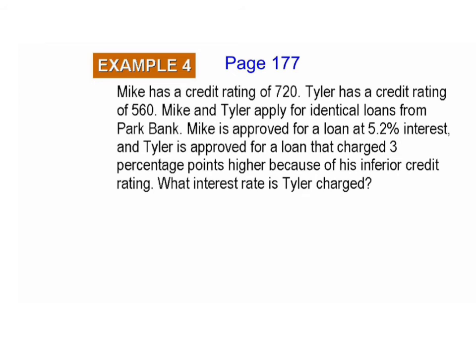Here's Example 4. Mike has a credit rating of 720 and Tyler has a credit rating of 560. Mike and Tyler apply for identical loans from Park Bank. Mike is approved for a loan at 5.2% interest, and Tyler is approved at a rate 3% higher because of his inferior credit. Tyler's interest rate is 5.2 plus 3, which equals 8.2%. Simple math, but it illustrates the fact that poor credit ratings will cost you money.